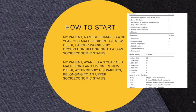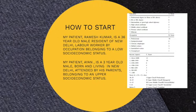How do you start with a patient description? Example one: My patient Ramesh Kumar is a 36-year-old male, resident of New Delhi, labor worker by occupation, belonging to a low socioeconomic status. Another example: My patient Ayaan is a 3-year-old male, born and living in New Delhi, attended by his parents, belonging to an upper socioeconomic status. You can use any standard chart for calculating the socioeconomic status.